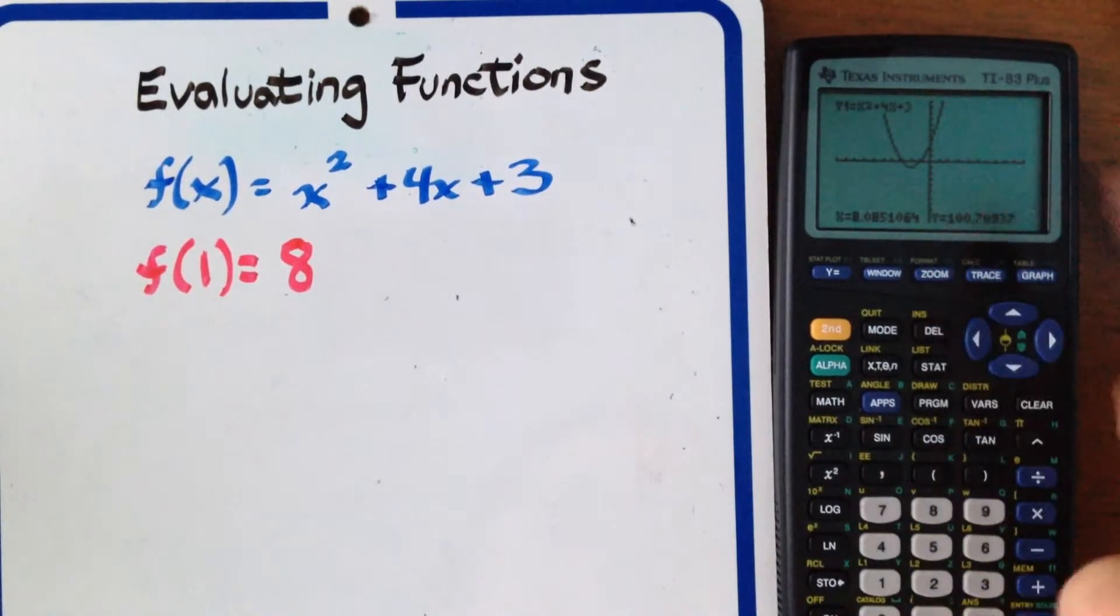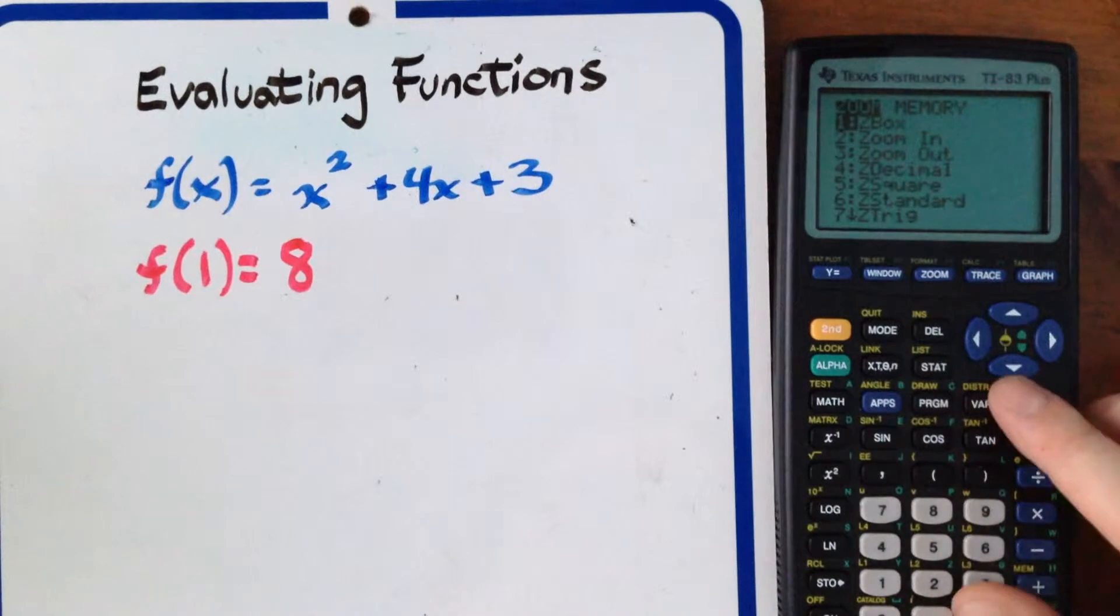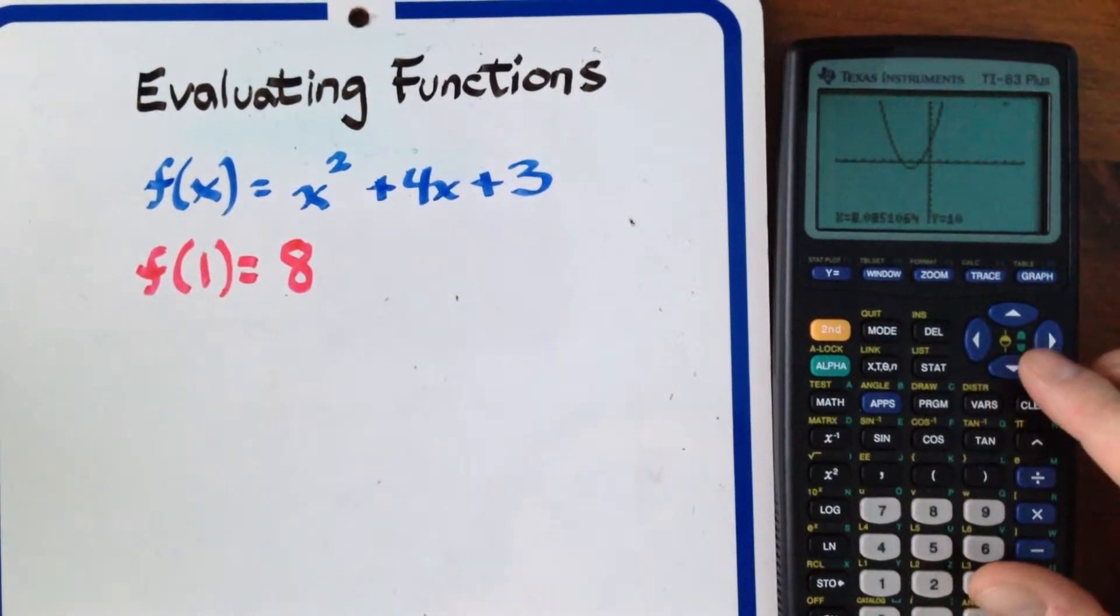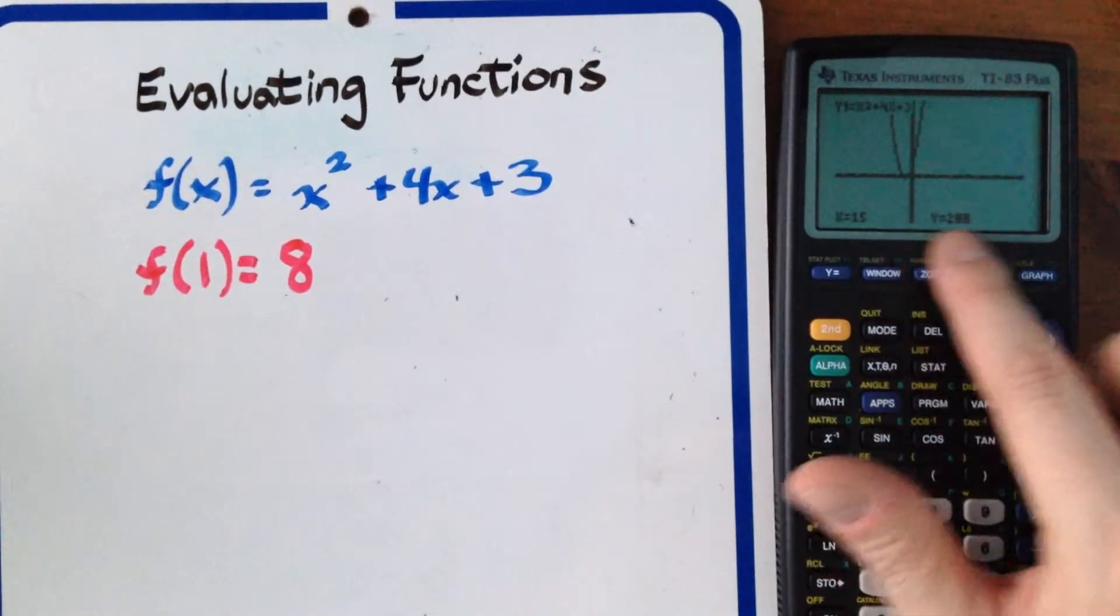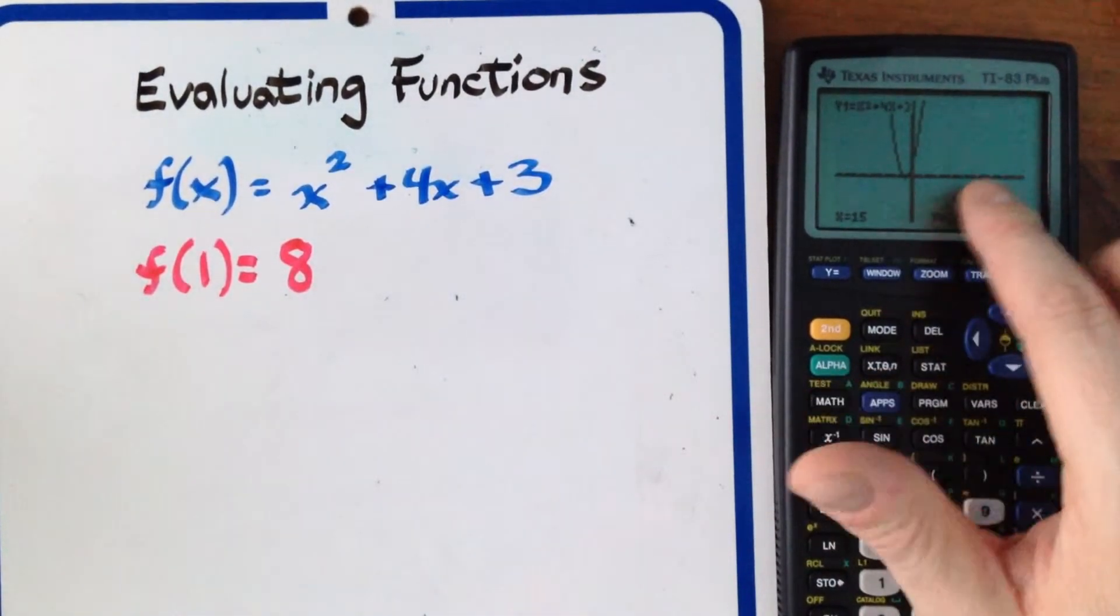So what you're going to want to do if you want to try 15 you're going to want to hit zoom here and then we're going to zoom out so then it's going to bring you to this screen and just hit enter again and it's going to zoom out a little bit and then you can see what happens if you put x equals 15 and then it actually does have enough room to figure it out.